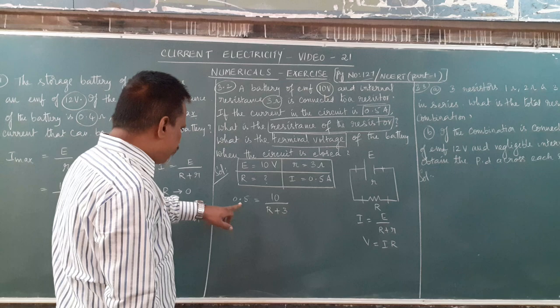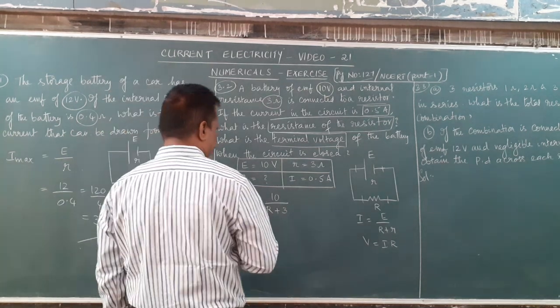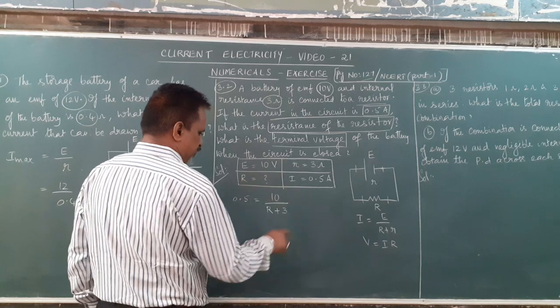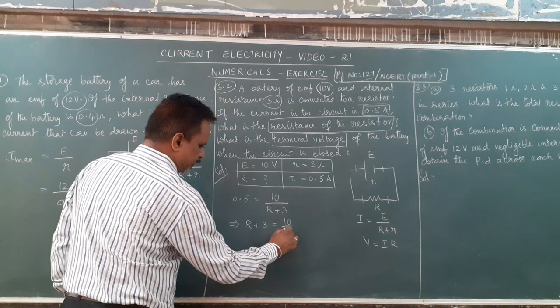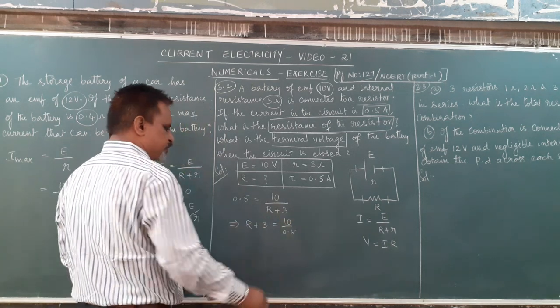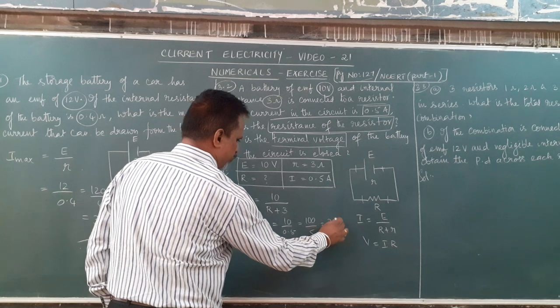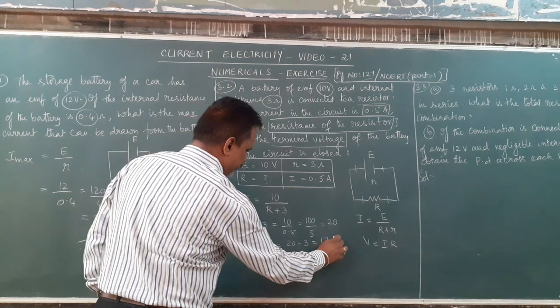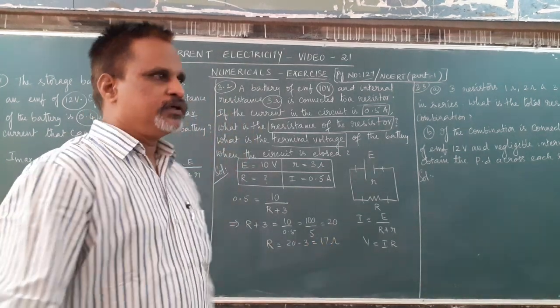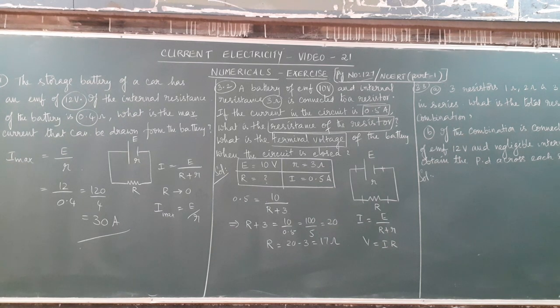R plus 3 equal to 10 by 0.5, which is 100 by 5, equals 20. So R equal to 20 minus 3, which is 17 ohms. The value of external resistance is obtained as 17 ohms.